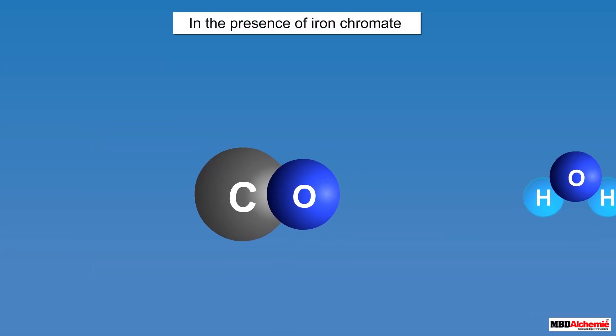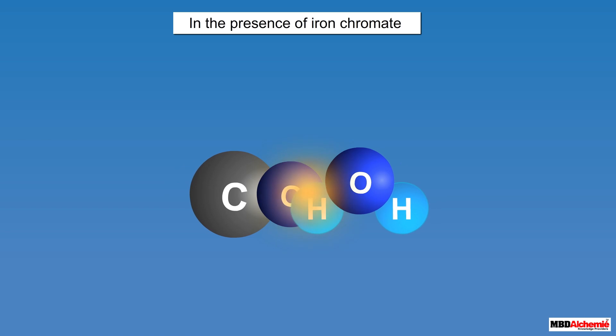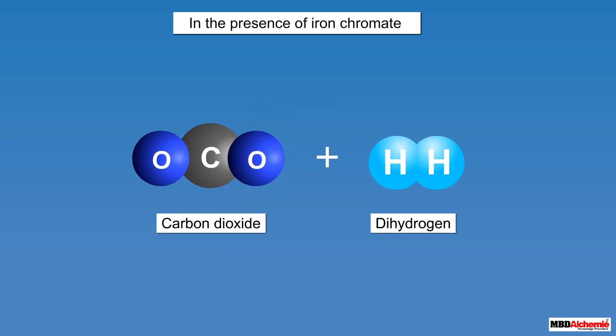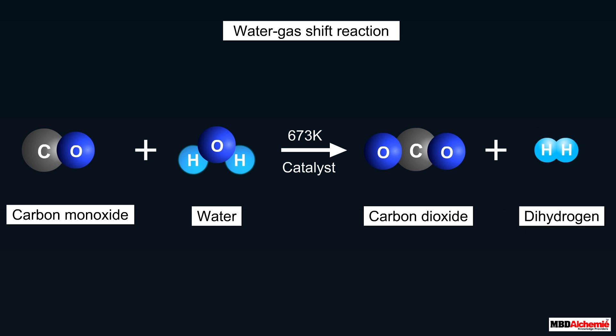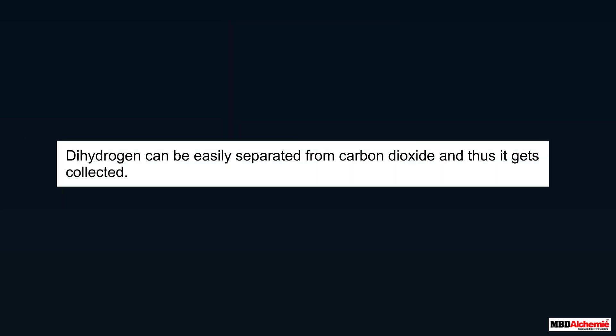Therefore, carbon monoxide of the syngas is made to react with steam in the presence of iron chromate as the catalyst. This reaction is called the water gas shift reaction. As a result, carbon monoxide changes to carbon dioxide along with the formation of more dihydrogen, which can then be easily separated and collected.